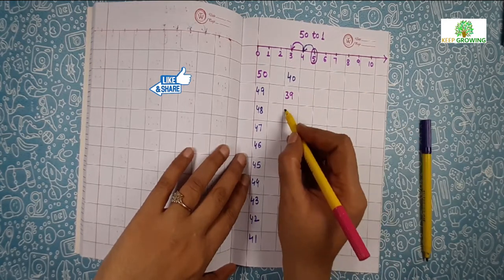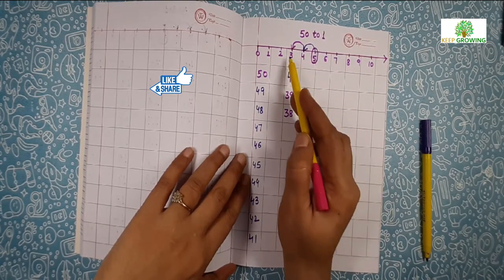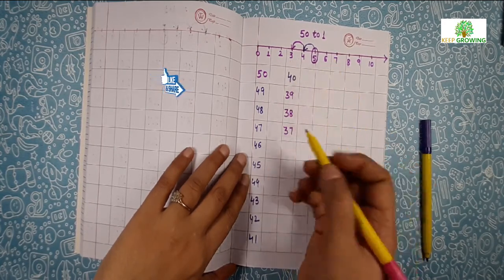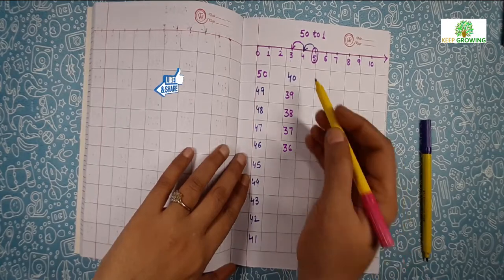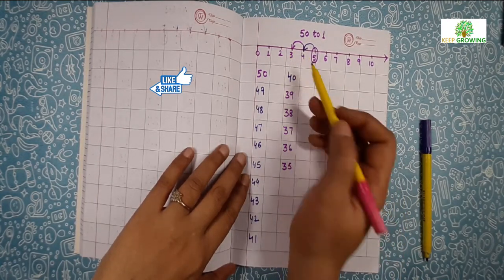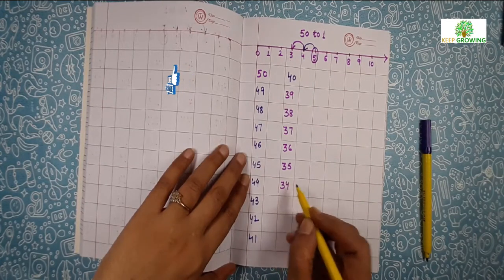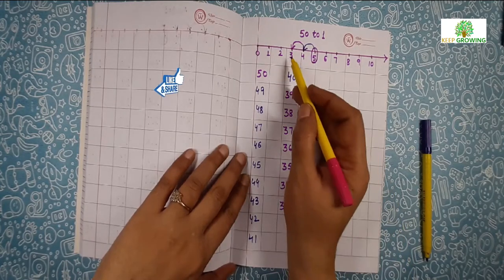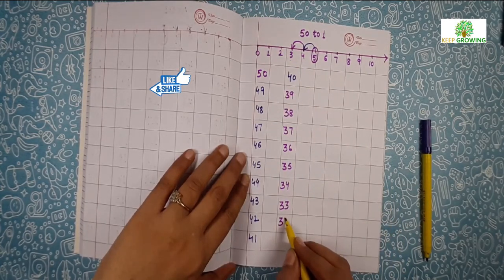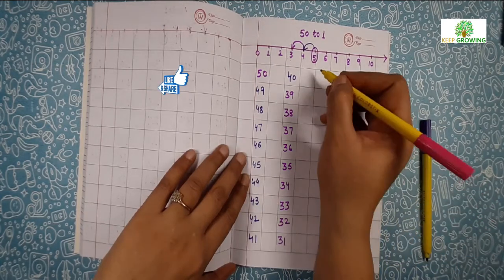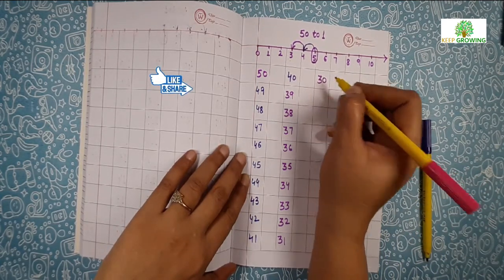3, 8, 38. 3, 7, 37. 3, 6, 36. 3, 5, 35. 3, 4, 34. 3, 3, 33. 3, 2, 32. 3, 1, 31. 3, 0, 30.